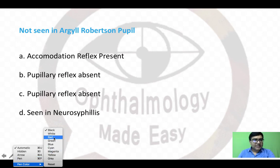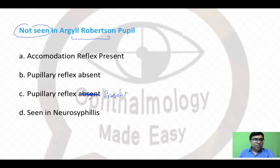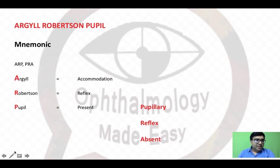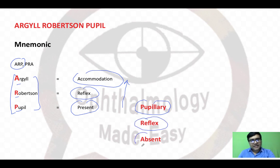In neurosyphilis, you can have an Argyll Robertson pupil. The question asks which of the following is not seen in Argyll Robertson pupil: accommodation reflex present, pupillary reflex absent, pupillary reflex present, or seen in neurosyphilis? The answer is C — pupillary reflex present, because pupillary reflex is absent in Argyll Robertson pupil. Use the mnemonic ARP: A — accommodation reflex present, and when reversed, pupillary reflex is absent.